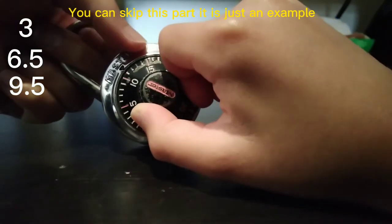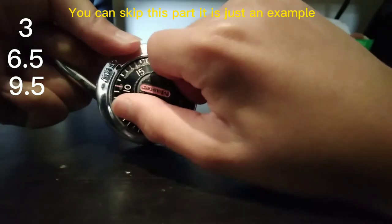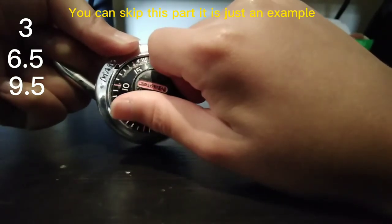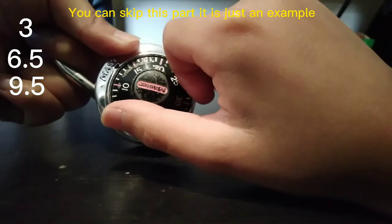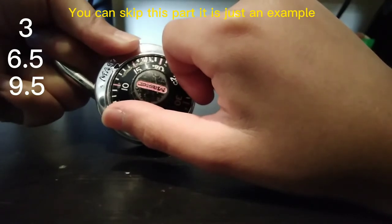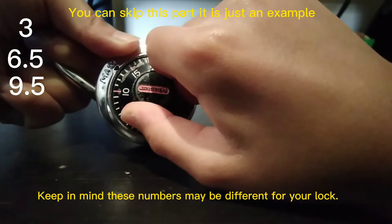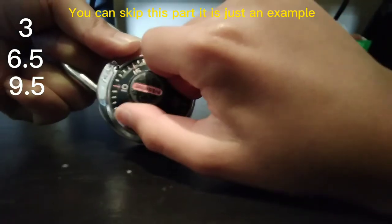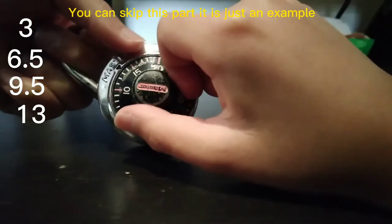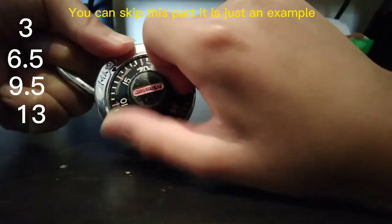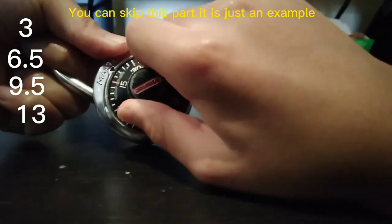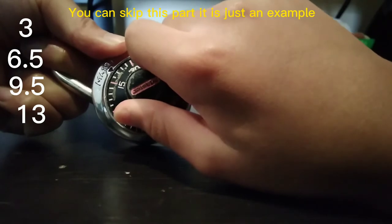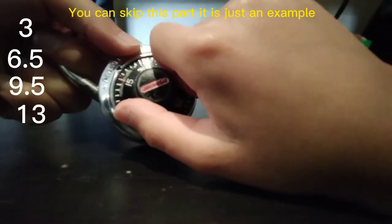Keep going, tighten it. Getting stuck between 12.5 and 13.5, so the middle number is 13. We're going to write that down. Keep going, it's getting stuck between 16 and 17, write that down.